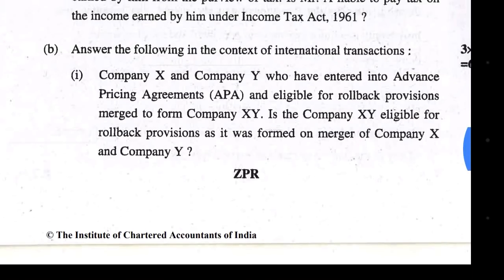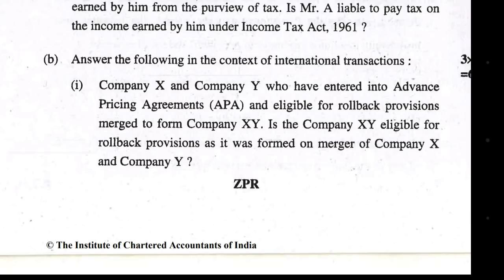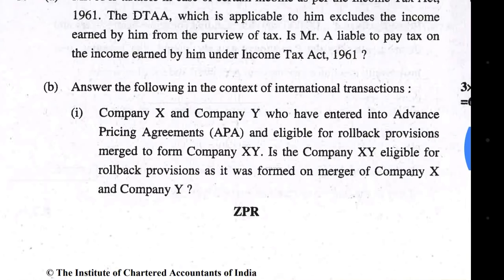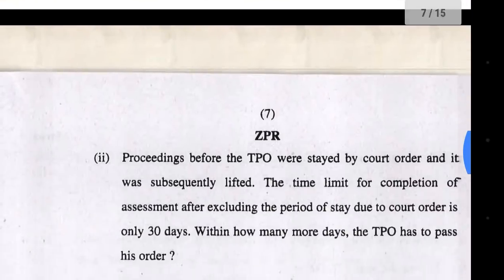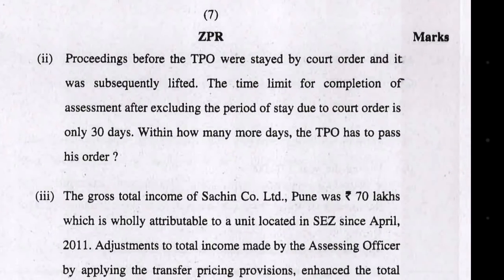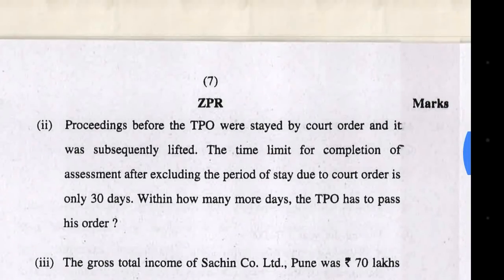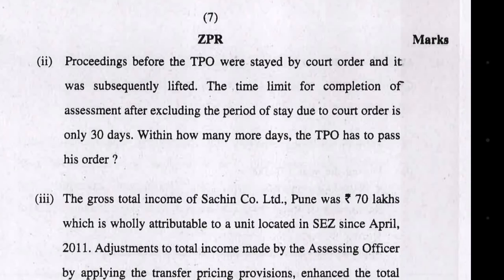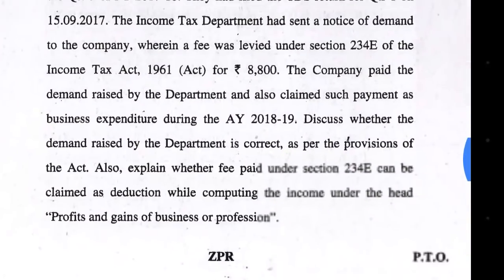Advance pricing agreement: the rollback benefit is available only to the company that originally applied. X and Y each applied separately, so if they merge to form XY, in my opinion XY would not get the rollback benefit. Regarding proceedings before the TPO — the time limit is 60 days. If, due to a court order, less than 60 days remain (for example, only 30 days were given in this case), the remaining period is extended to 60 days. This was the provision to state here.